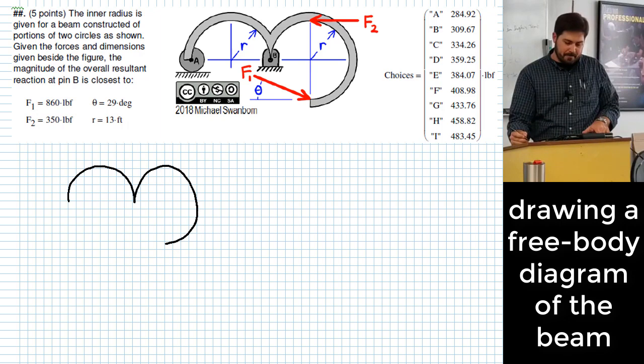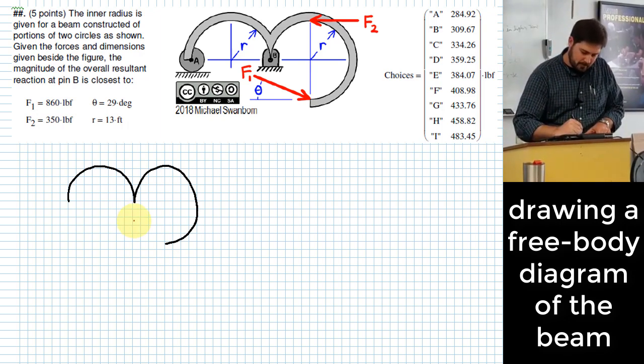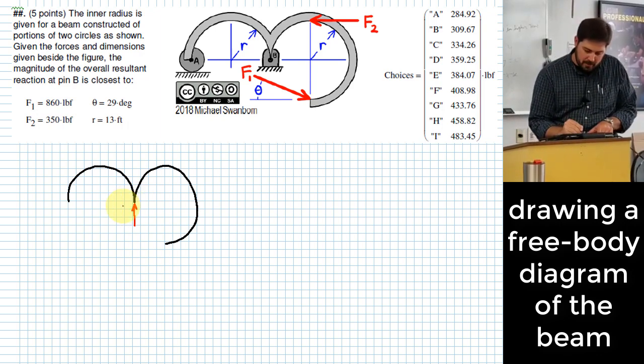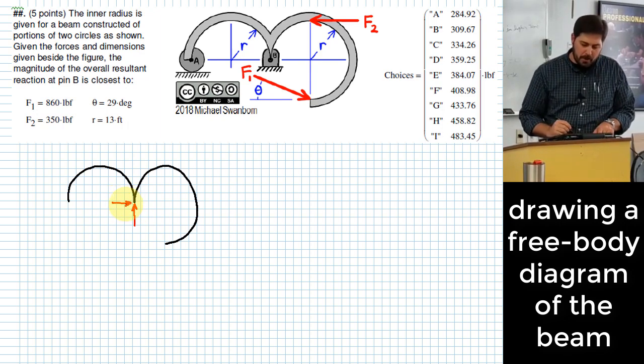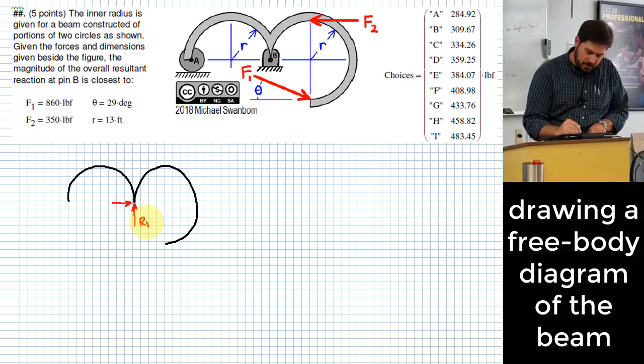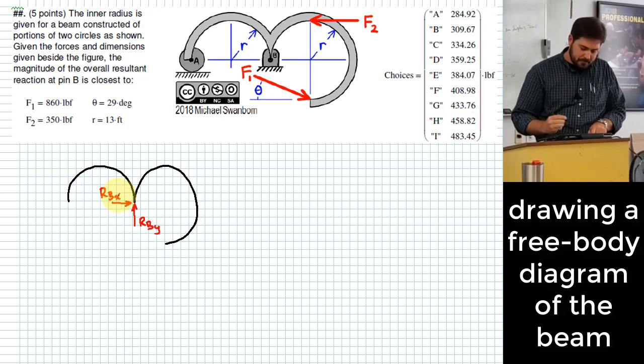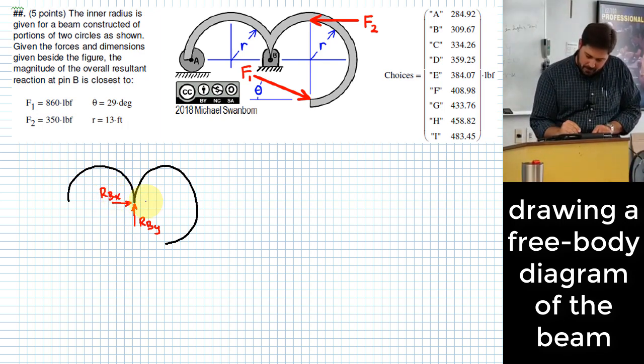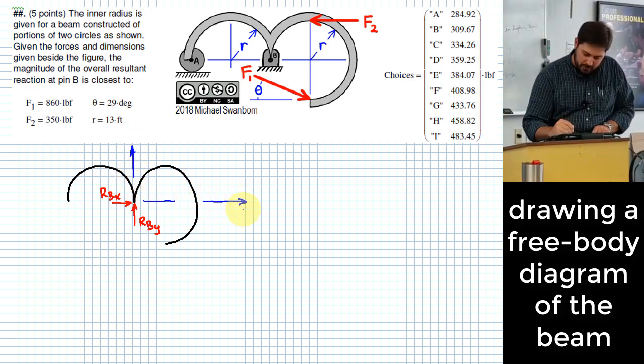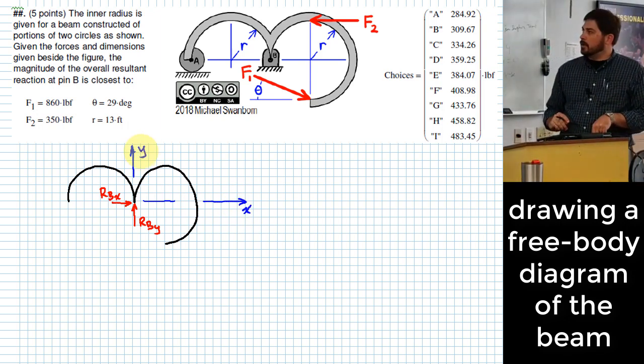Okay, we have a pin at point B. So I have two components of reaction at point B. This would be, I'll call this RBY, and I'll call this RBX. I have kind of tacitly established my coordinate system, so I will more explicitly establish my coordinate system. What else?